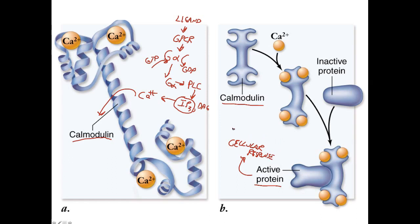This entire pathway results in a cellular response of the cell to a particular extracellular signaling molecule — the ligand. This cascade was caused by calcium binding to calmodulin, which in turn was caused by the release of IP3, and so on. You can go through this pathway again and again to understand it.